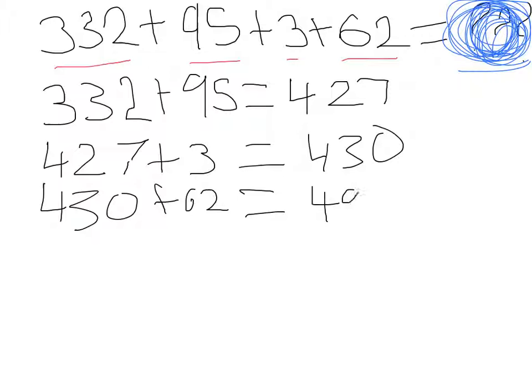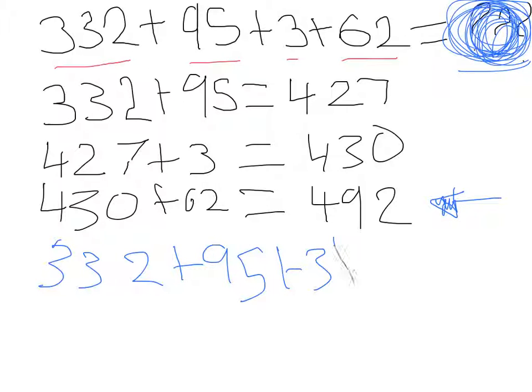Equals four hundred and ninety-two. Look at that! Wait, that's our mystery number! Yes, this one there. That's our mystery number, so 332 plus 95 plus 3 plus 62 equals 492.